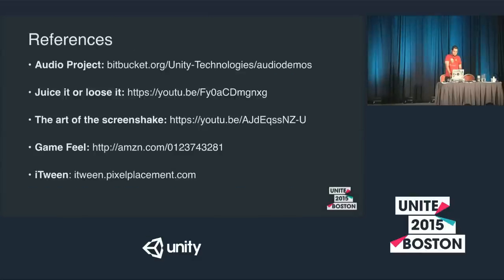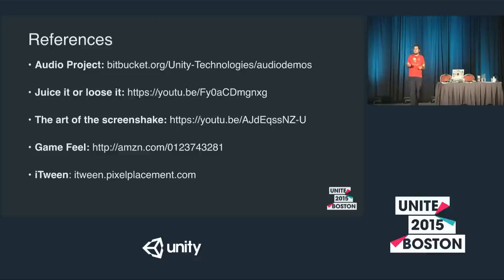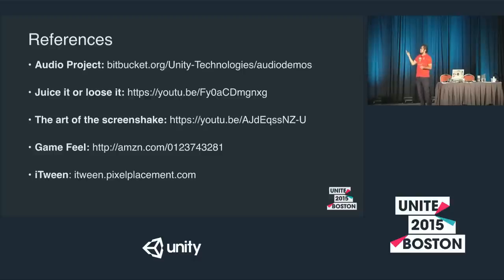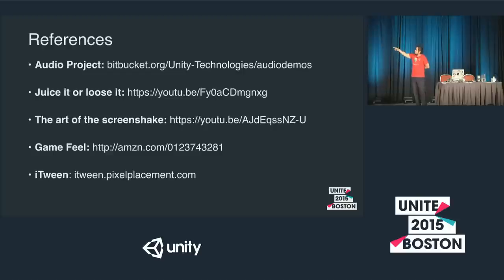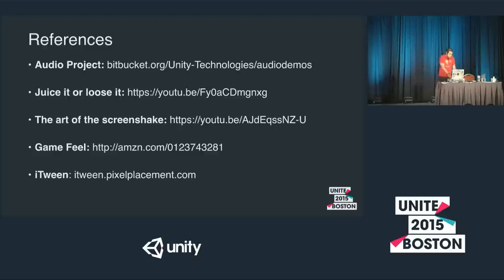The idea is not to tell you to go and replicate this on every game you make. The idea is that every time you're making a game, you think about these small things that make all the difference. You cannot apply the same thing to all types of games — imagine a World War II game with all this music and bloom effects; that probably won't work. These are some references: the audio project and all audio assets are in Unity's public bucket, the project is open source. Please go watch 'Use It or Lose It' and 'The Art of the Screen Shake,' read the Game Feel book by Steve Swink, and I use iTween, a free script on the asset store at itween.pixelplacement.com.